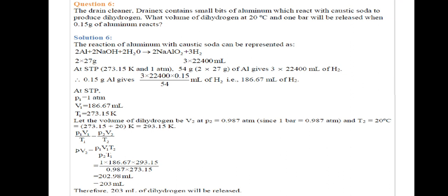2Al + 2NaOH + 2H2O gives 2NaAlO2 + 3H2. Aluminum's weight is 27 grams. So 2 moles is 2 times 27 grams or 3 times 22.4 liters which is 22,400 ml. So at STP which is 273.15 Kelvin and one atmosphere pressure, 54 grams equal to 2 times 27 grams of aluminum.